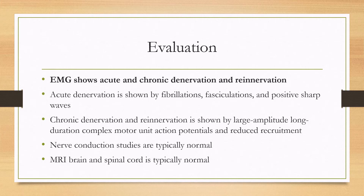The nerve conduction studies are typically normal, and MRI of the brain and spinal cord are typically normal as well. However, if someone has frontotemporal dementia, then the MRI brain may show degeneration in the frontal and temporal lobes.